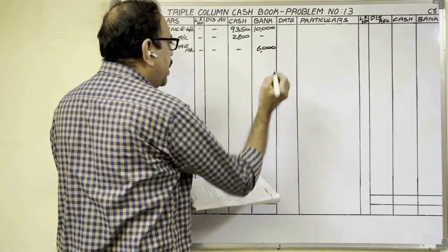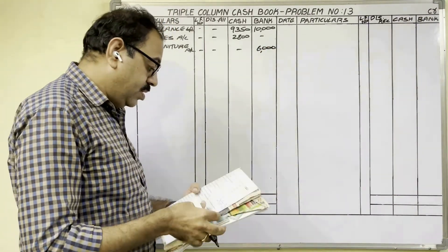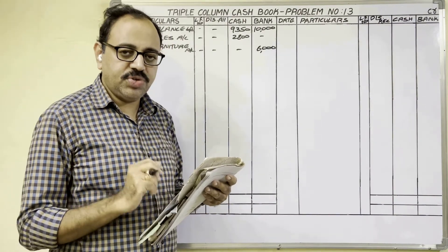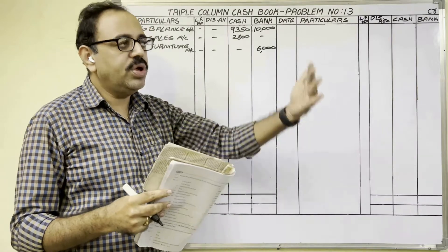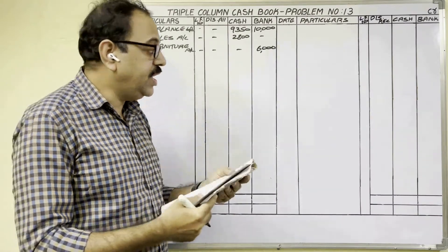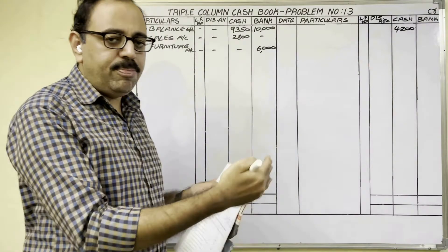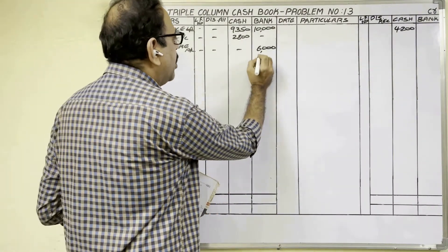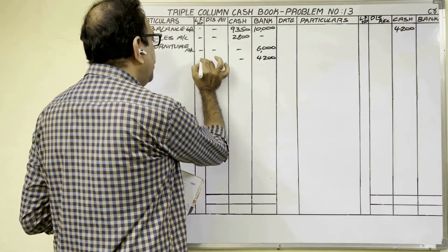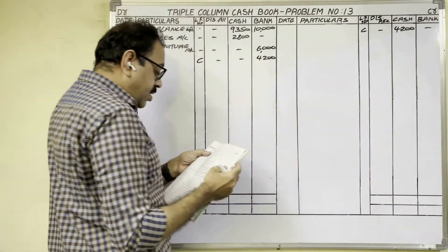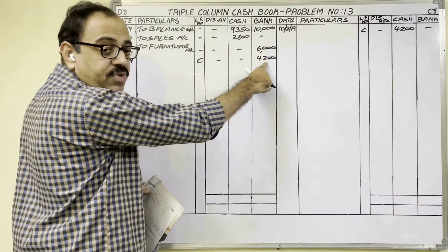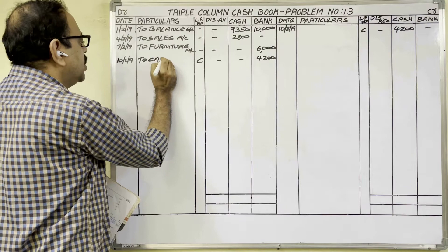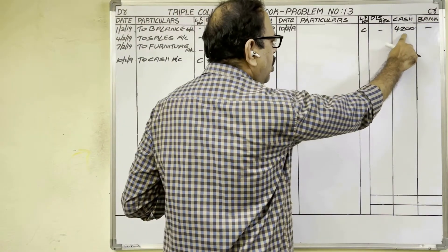Next: cash deposited into bank — this is a contra entry, so we write it two times. Cash is going from us, so credit side cash column. We are depositing money in the bank so bank balance is increasing — debit side bank column. This is contra so write 'C' in the L.F. column. Date 10th: in the bank column write 'To Cash Account'; in the cash column write 'By Bank Account.'